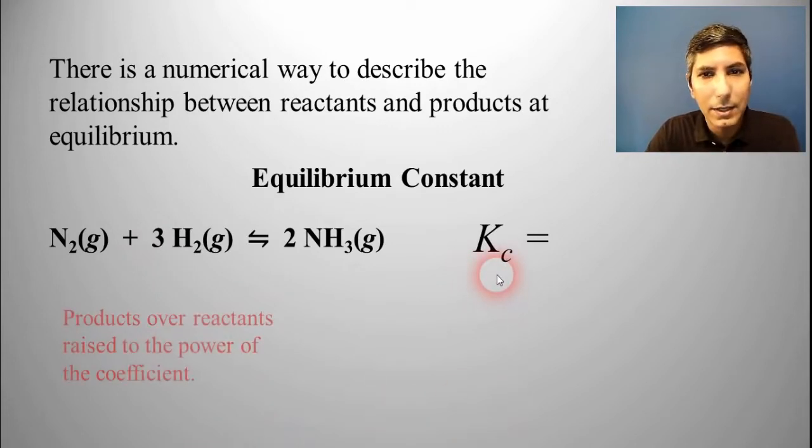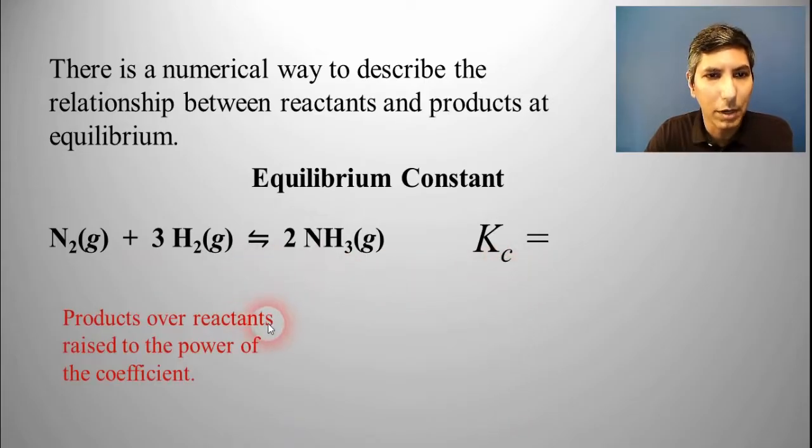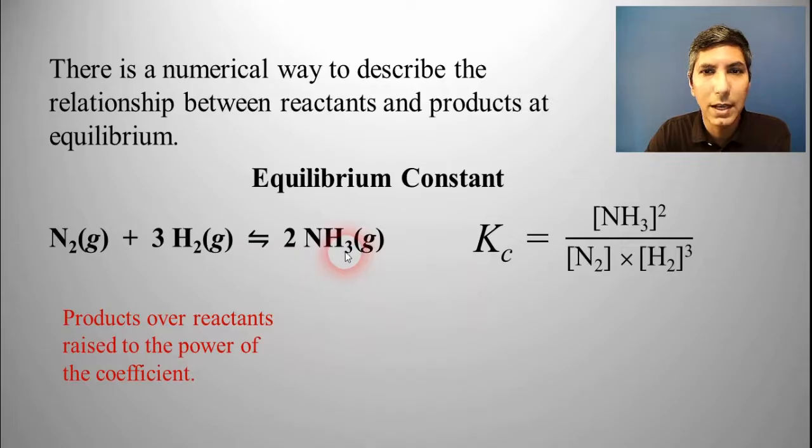So the equilibrium constant, which we call K, is equal to products over reactants raised to the power of the coefficient. So it's the concentration of NH3 squared, and it's squared because of that 2 right there, all over the concentration of nitrogen times the concentration of hydrogen H2 raised to the third power. And that third power is coming from this coefficient 3.